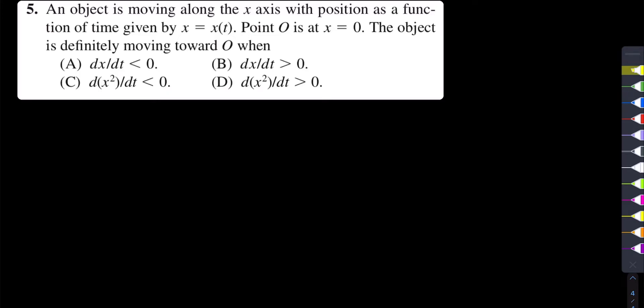Let's solve the fifth multiple choice question of chapter 2 of the book of Halliday, Resnick & Crane. The statement of the problem is: an object is moving along the x-axis with position as a function of time given by x equals x of t, and point O is at x equals 0.